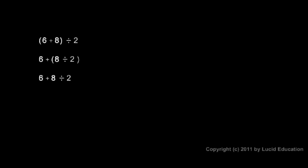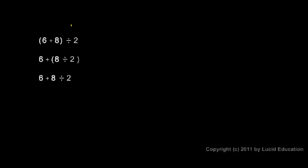They are different problems though. In the first problem, we're told to do the 6 plus 8 first, and that result is divided by 2. So let's do that: 6 plus 8 is 14, so I have 14 divided by 2, and you can tell that's going to be 7 for an answer.